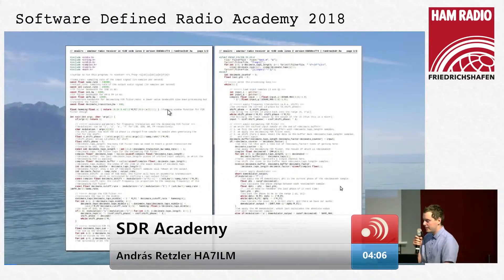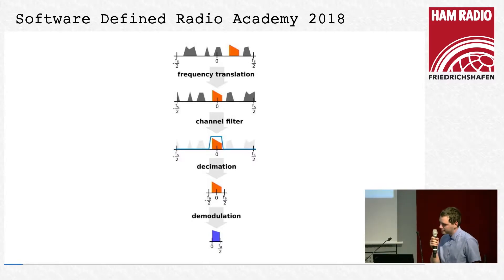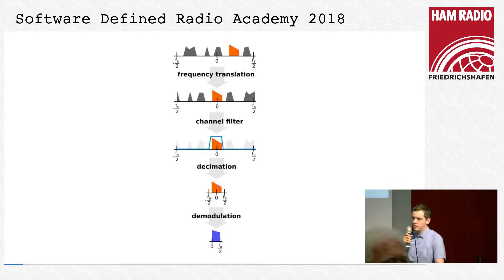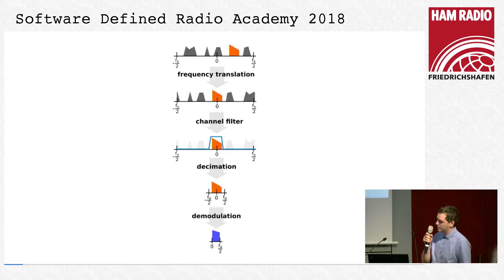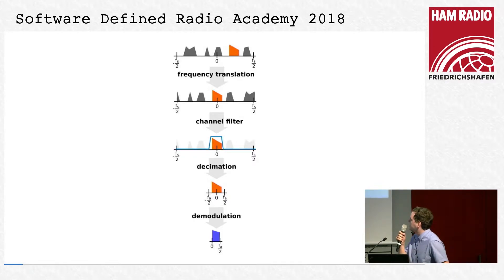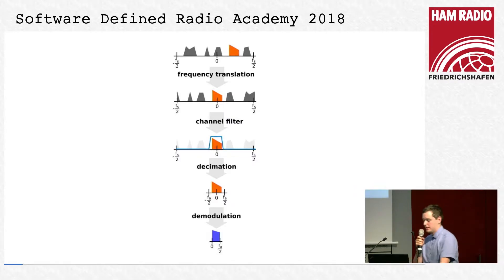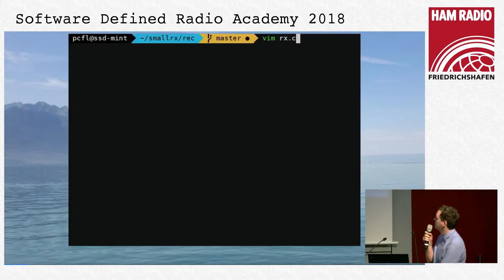So, what does this code do? First, we have an input signal somewhere in the spectrum, and we have a signal of interest in the spectrum somewhere. We have to move it to the center by frequency translation and shifting. Then we reject anything else and do a decimation, and there we have our audio output. Let's start to do it.